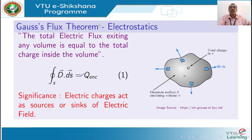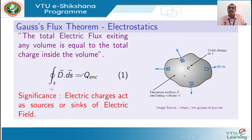The first theorem to discuss is the Gauss Flux Theorem of Electrostatics. The statement is: the total electric flux exiting any volume is equal to the total charge enclosed by the volume. Mathematically, it is represented by the integral over a closed surface of vector D dot vector dS, which is equal to Q enclosed — the total charge enclosed by the Gaussian surface.